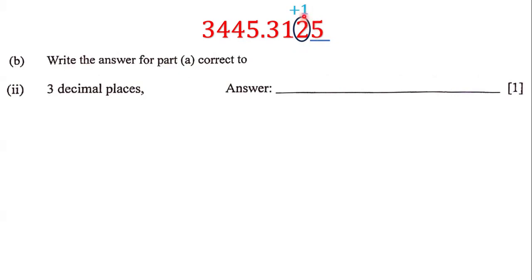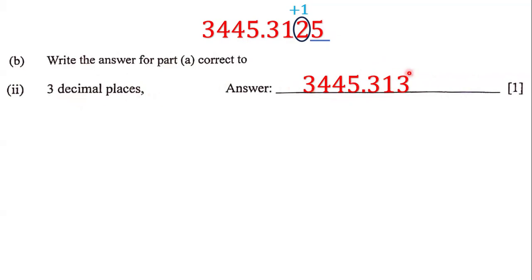Two plus one is three, so we have 3,445.313. We do not write the 5 at the back because we only want to correct to three decimal places — if we put that 5 at the back, it would be four decimal places. So our answer is 3,445.313.